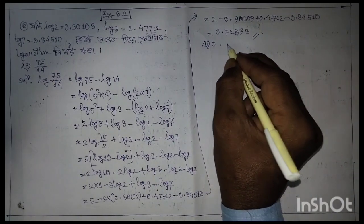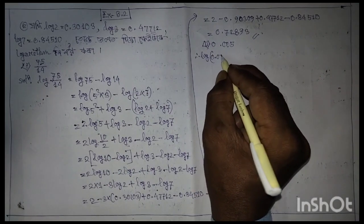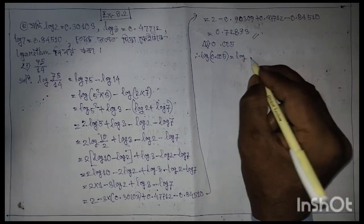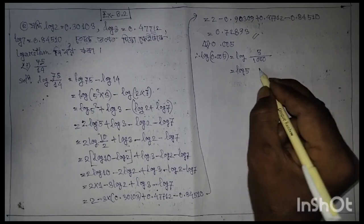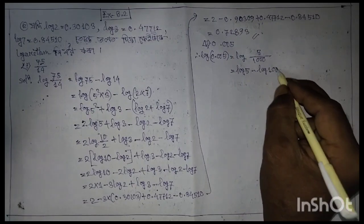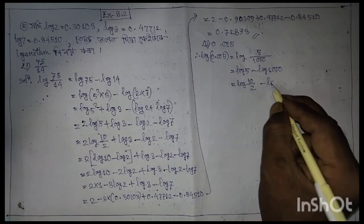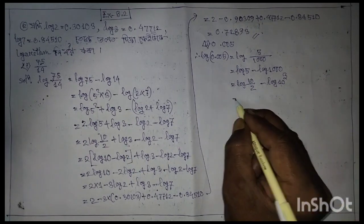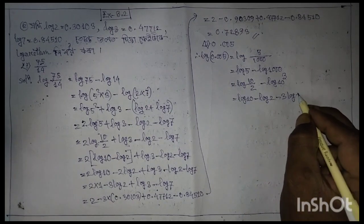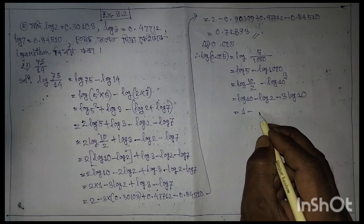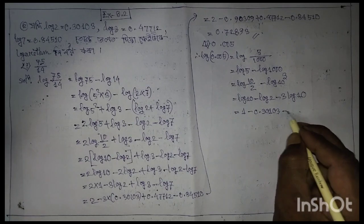Question 2: Find log of 0.005. Log 0.005 equals log(5/1000), which equals log 5 minus log 1000. Log(10/2) minus log in cube, which gives log 10 minus log 2 minus twice log 10.